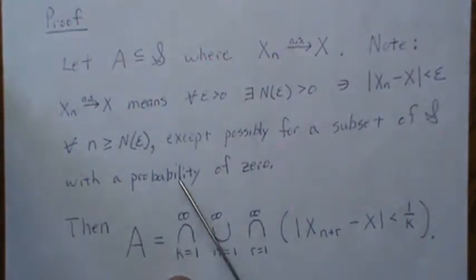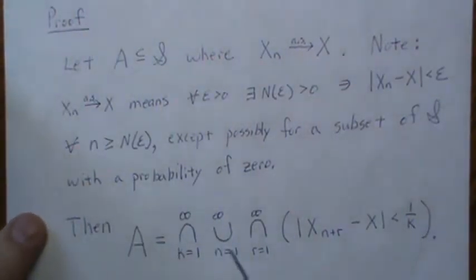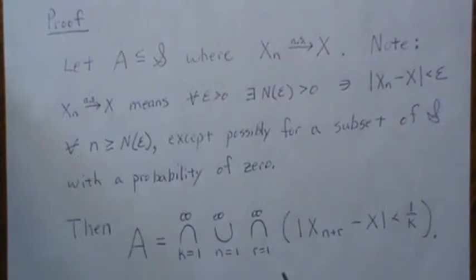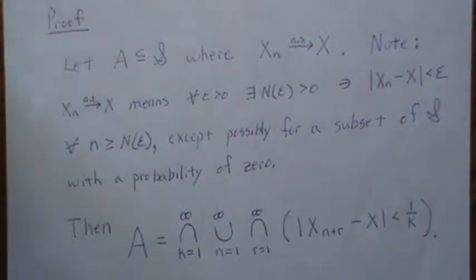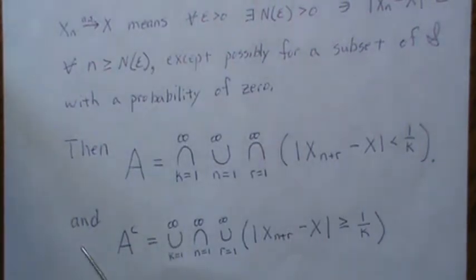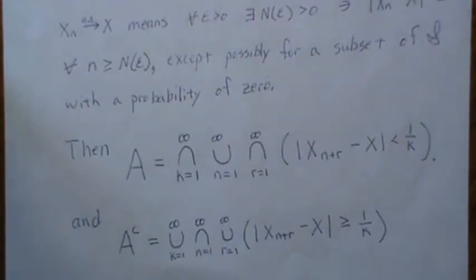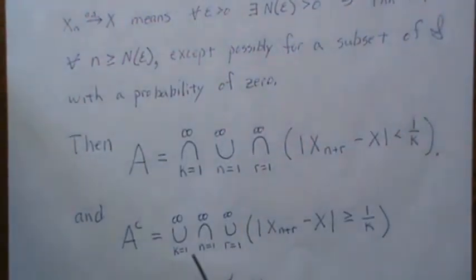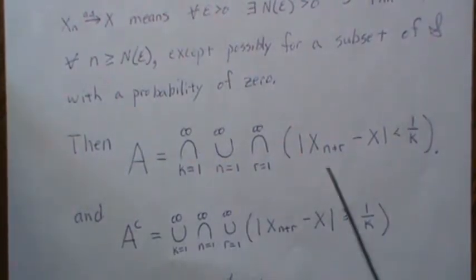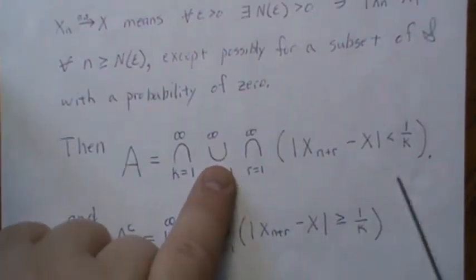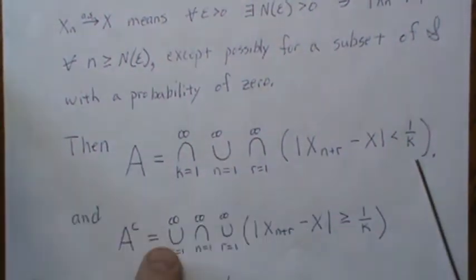But then we intersect over all possible epsilons. This is the crux of the proof, and the intersection-union-intersection can be tough - write it out and try to get that straight. So then we know that on the complement of A, Xn does not converge almost surely, and A complement has a probability of zero. If we take the complement of this, DeMorgan's Law says that we change this to the union and then we have the complement of this.